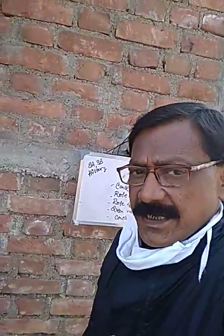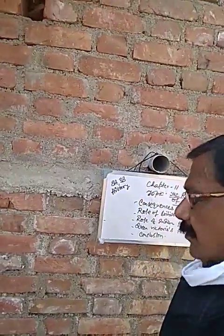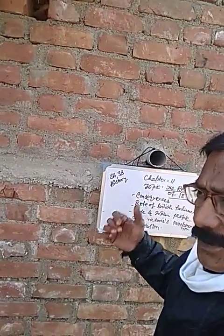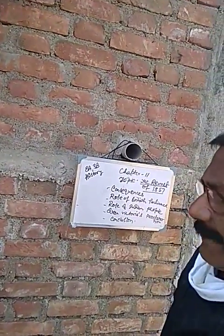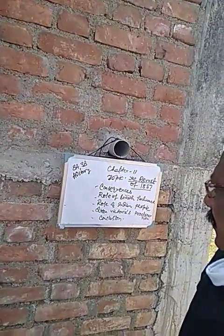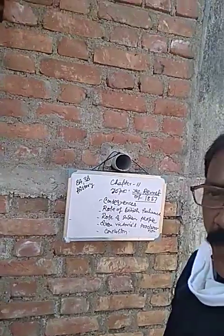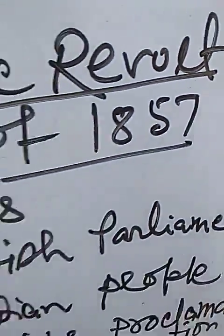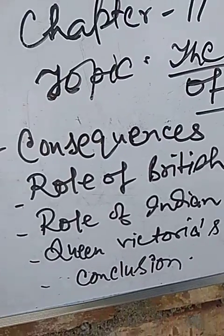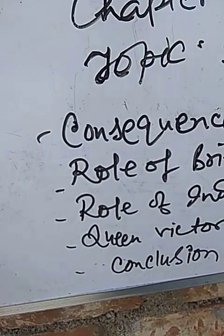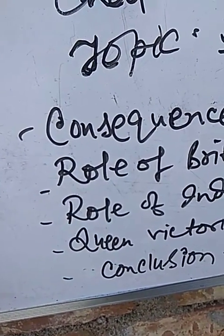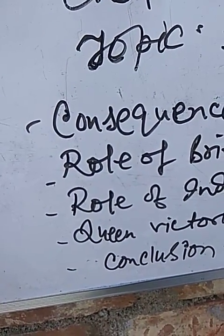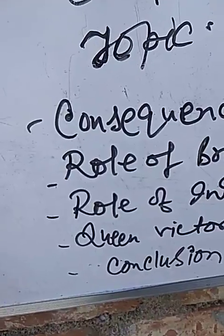Dear students of class 8a and 8b, today's lesson is lesson number 11, topic: The Revolt of 1857. In this lesson, I have mentioned five points on the blackboard. Please look at it.